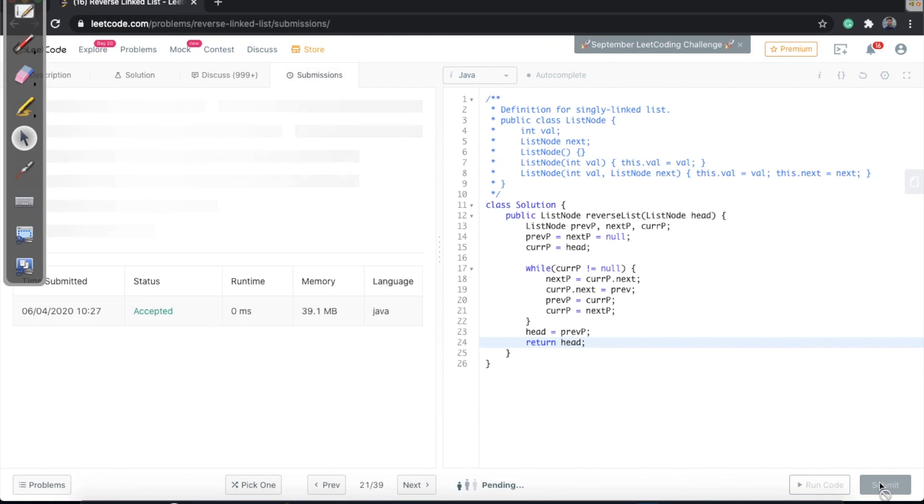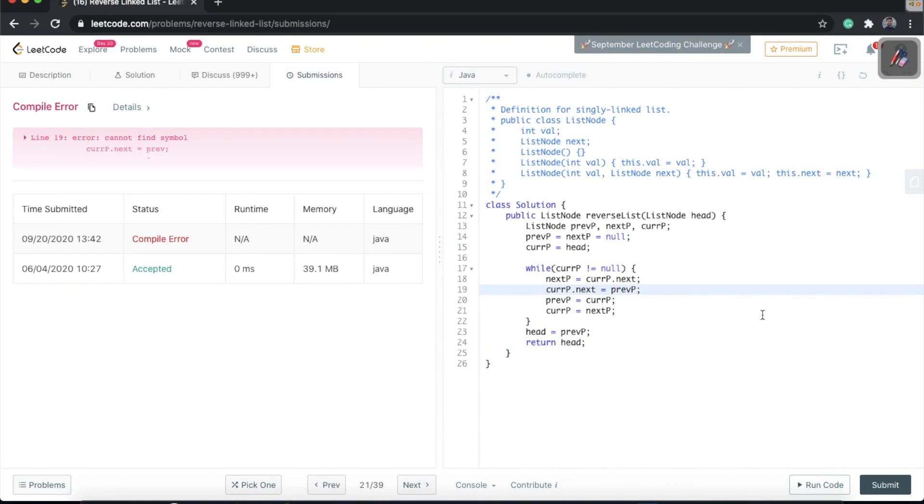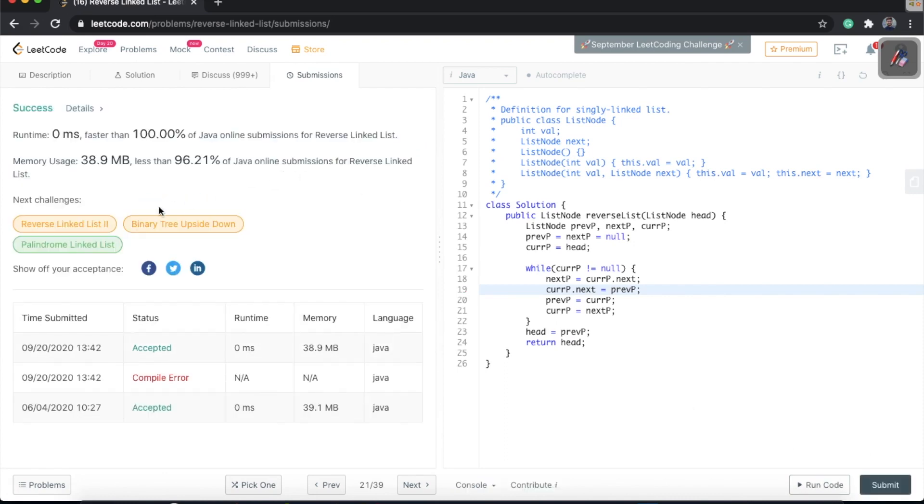Let's try to submit this code. There is an error with the previous pointer declaration. Let me fix that. Perfect! The solution has been submitted successfully. I have a runtime of 0 milliseconds, faster than 100% of the Java online submissions for reverse linked list. So this is the way we can write this code.